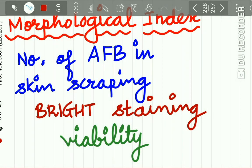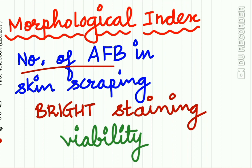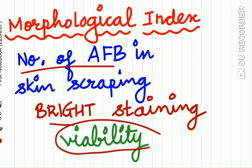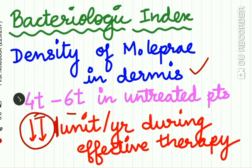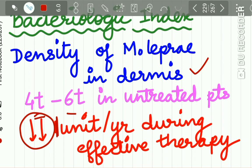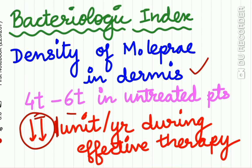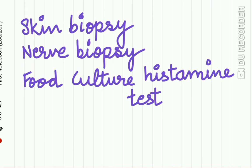The morphologic index is a measure of the number of acid-fast bacilli in the skin scraping that stain uniformly bright and are viable. The bacteriologic index is a logarithmic-scale measure of the density of M. leprae in the dermis — it may be as high as 40 to 60 in an untreated patient, and this count reduces by one unit per year if effective therapy is given.